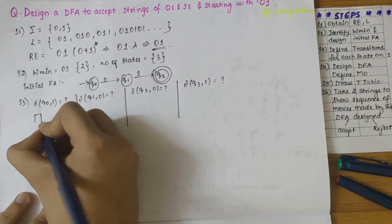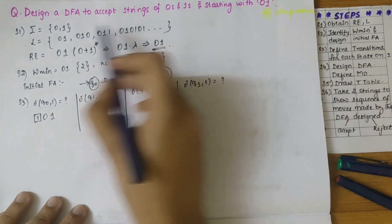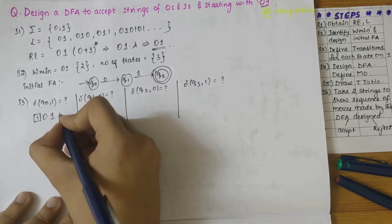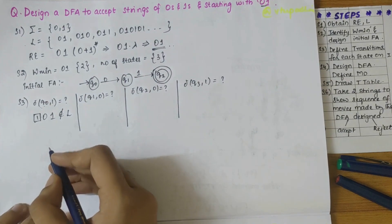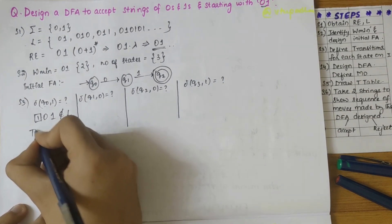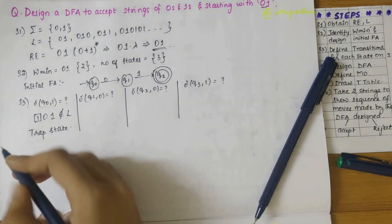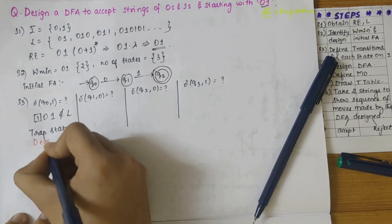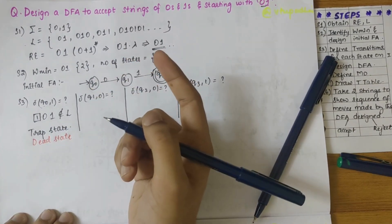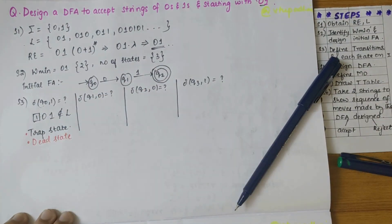First, q0 on 1: the string starts with 1 — is it starting with zero-one? No, it is not. It does not fall under the language set. If it does not fall under the language set, it will be under the trap state. A trap state is also called a dead state — once the automata enters this state, it can't come out. For a trap state, it is always a self-loop.